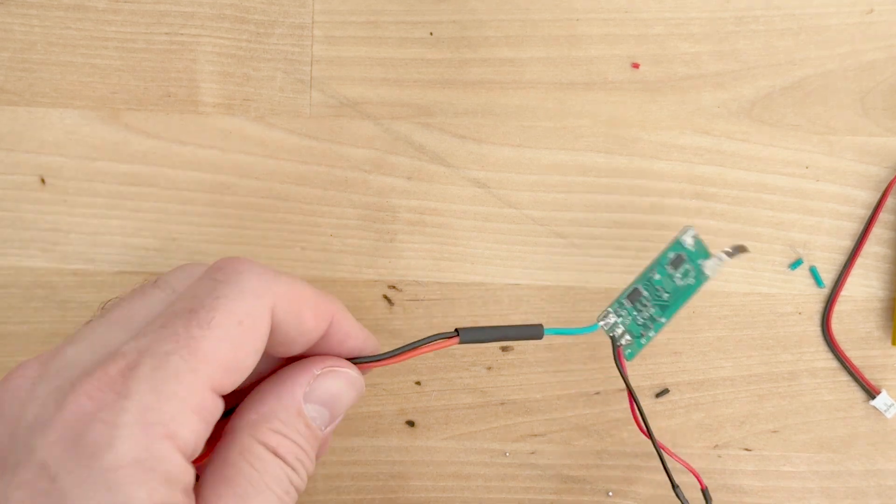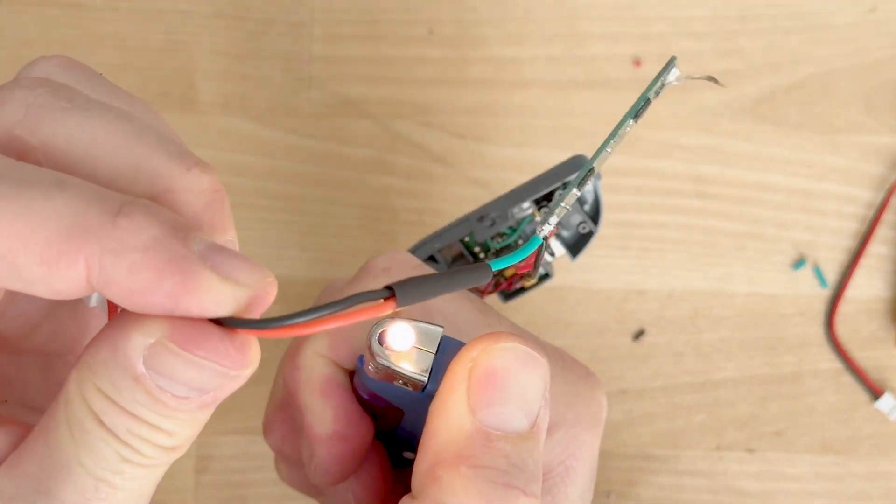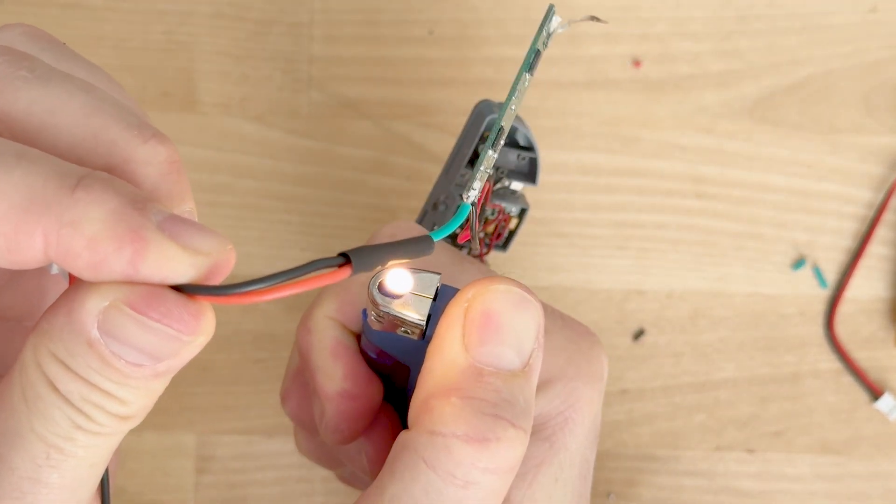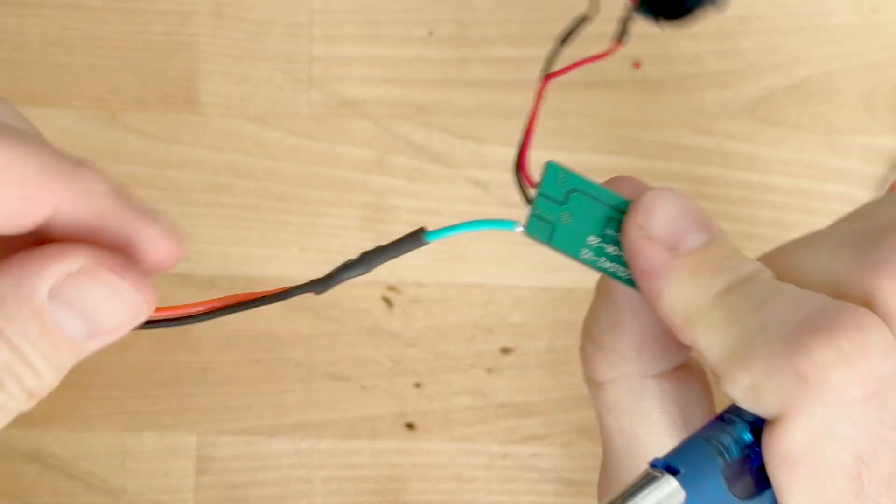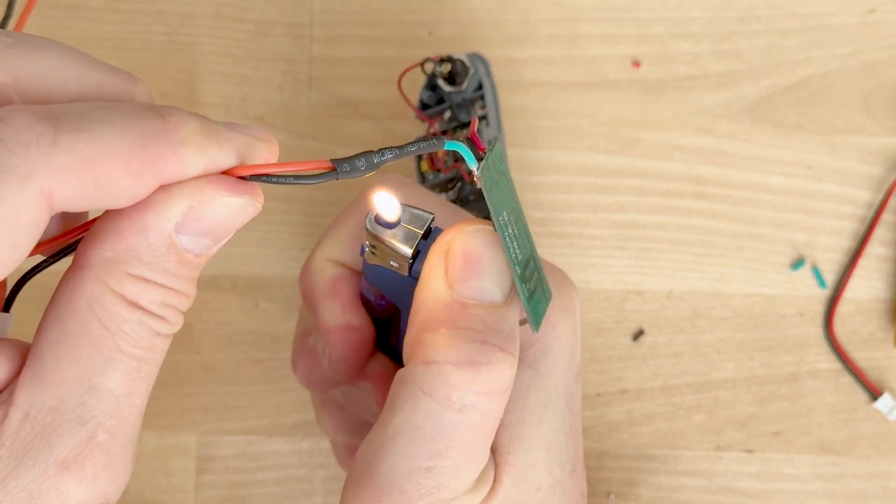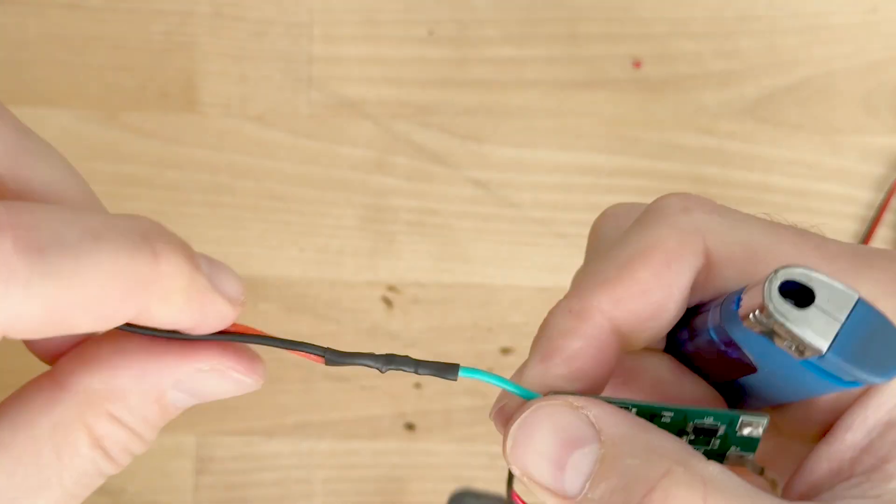And then we're just gonna protect things with some heat shrink. It's just best practice. I like using the heat shrink versus tape. Tape just ends up coming apart over time.